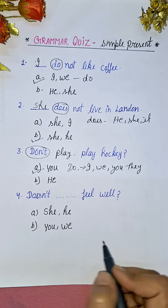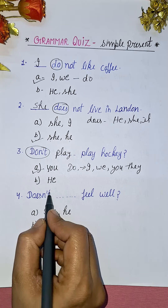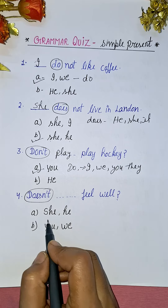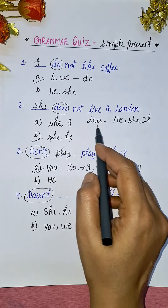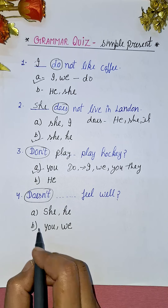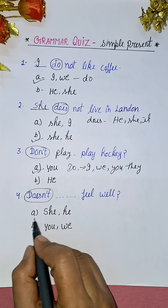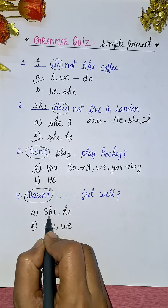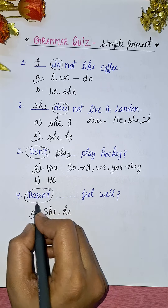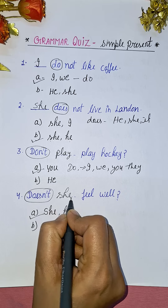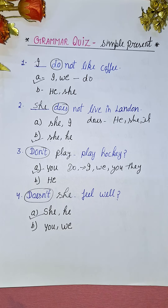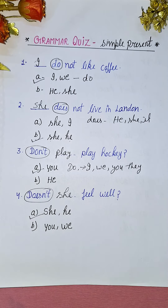Again, 'doesn't' is your keyword. With 'doesn't' we use singular subjects — he, she, it. So the right option will be 'she' or 'he'. For example: 'Doesn't she feel well?' or 'Doesn't he feel well?' This is all about your grammar quiz based on simple present tense.